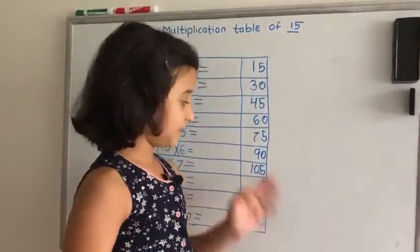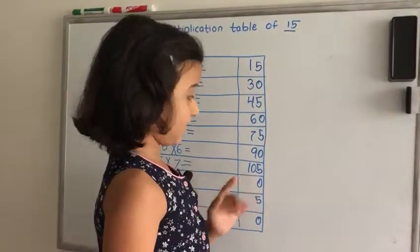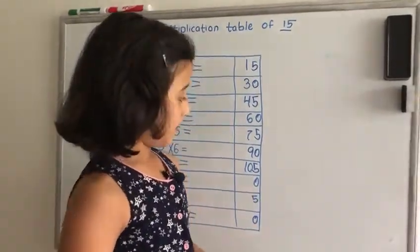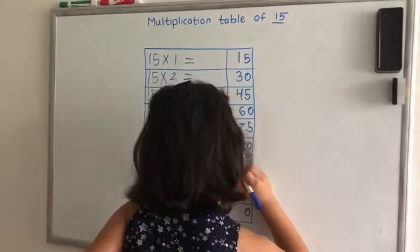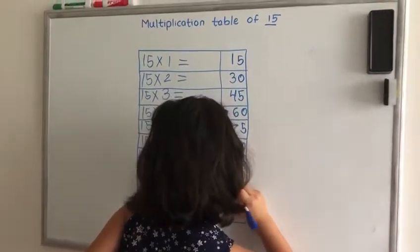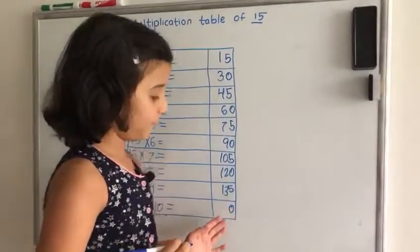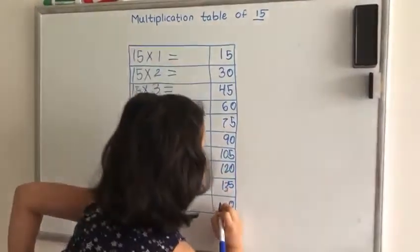And then skip 11 and write 12 and 13, skip 14 and write a 15.